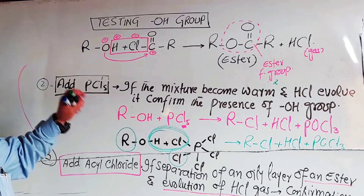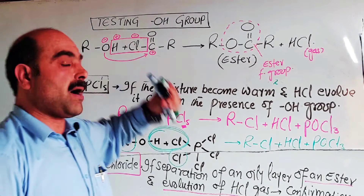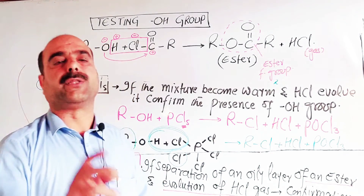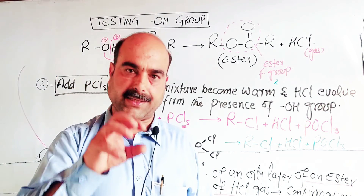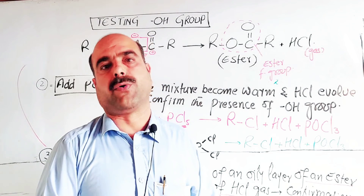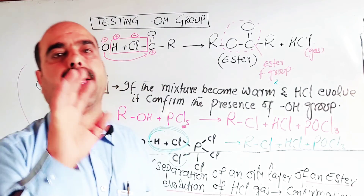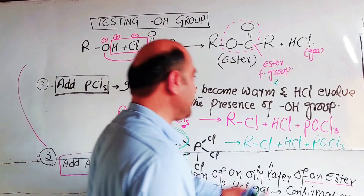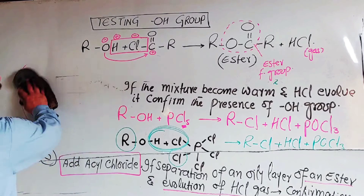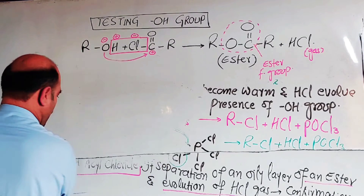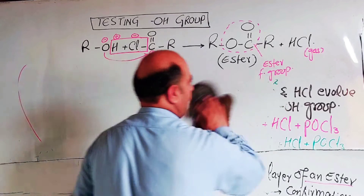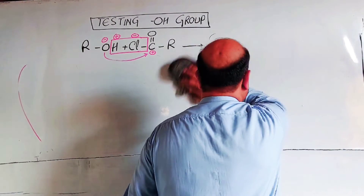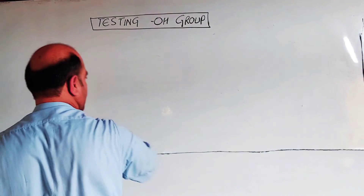So these are the three tests to detect the OH group in an unknown compound. First, the sodium metal test; second, the PCL5 test; and third, the acyl halide test. This is from the practical portion on detection of functional groups in organic compounds.